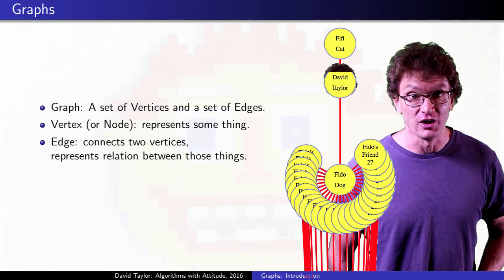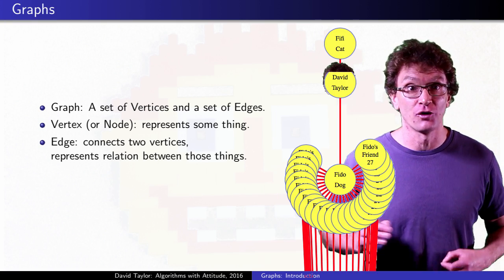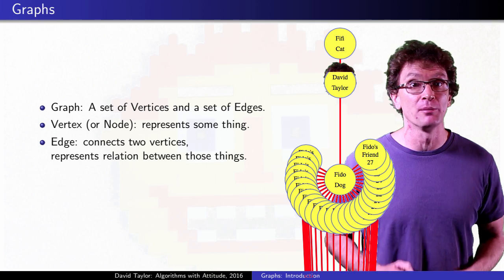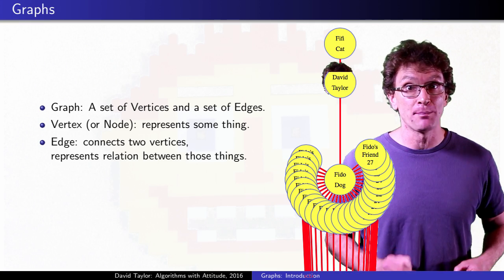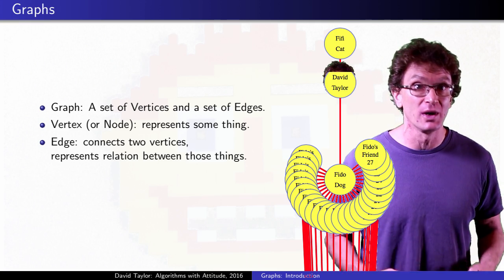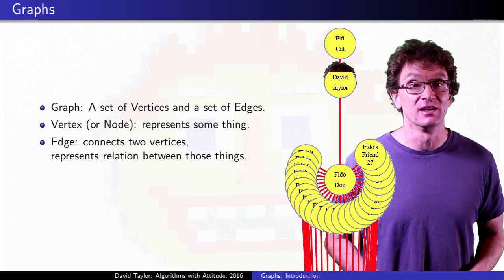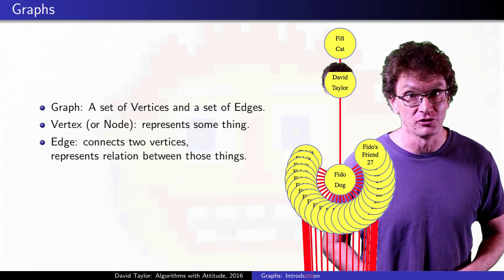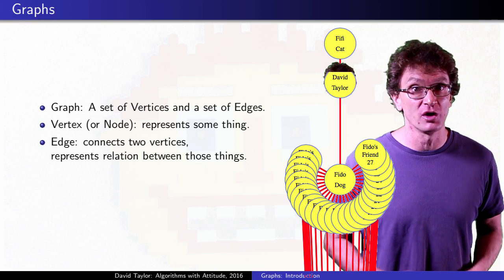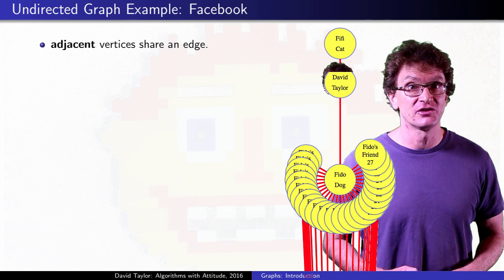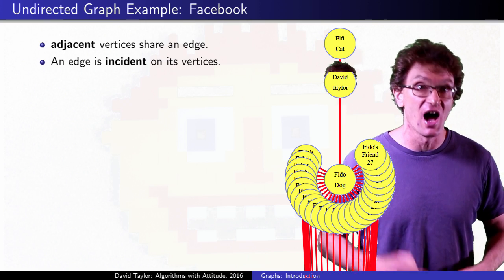Starting with a graph for Facebook, each vertex stands for a person, and an edge between people means they're friends. Edges represent some relationship between the vertices they connect. In this case, Facebook friends. For graphs, we say those vertices are adjacent, and say that the edge is incident on its vertices.